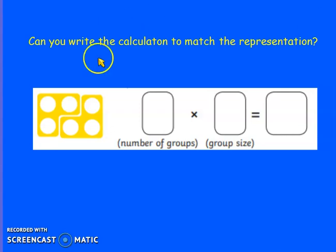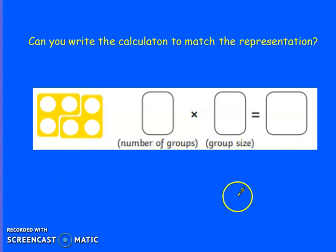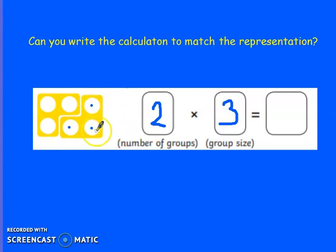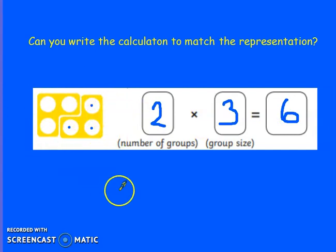Here we've got a representation showing us a calculation from the 3 times table. What does it show us? How many groups have we got? 1, 2. We've got 2 groups of how many in a group? 1, 2, 3. So 2 times 3. How many altogether? 1, 2, 3, 4, 5, 6. 2 times 3 equals 6. That's what the picture is showing us.